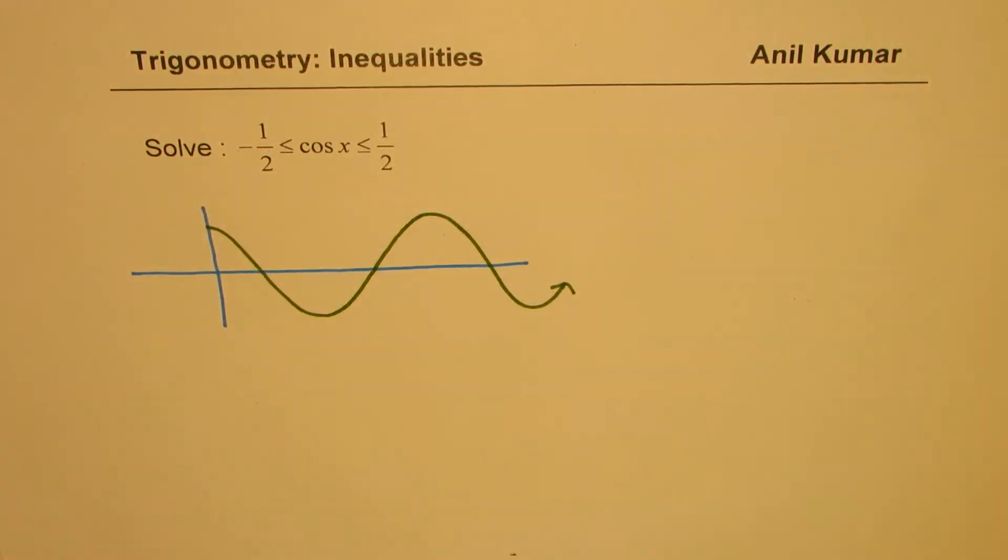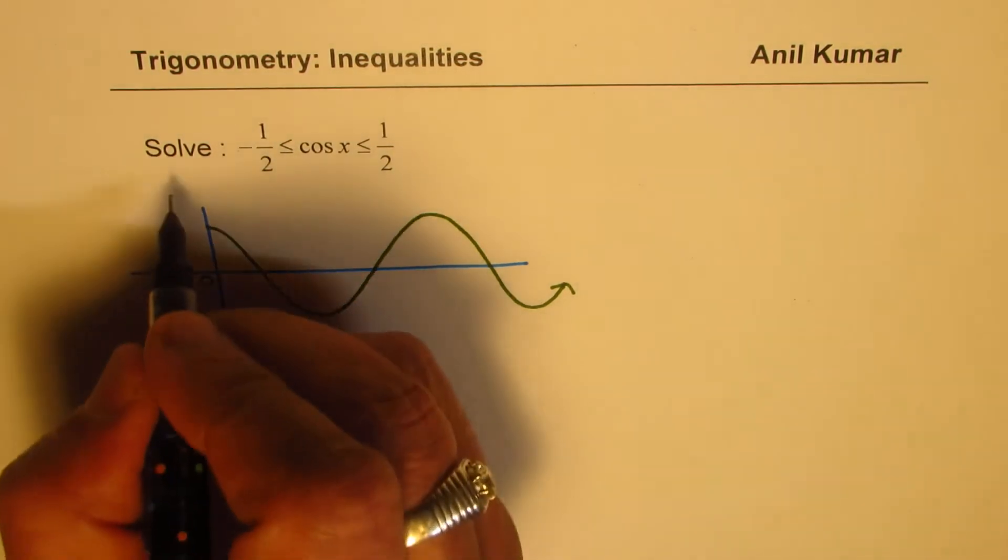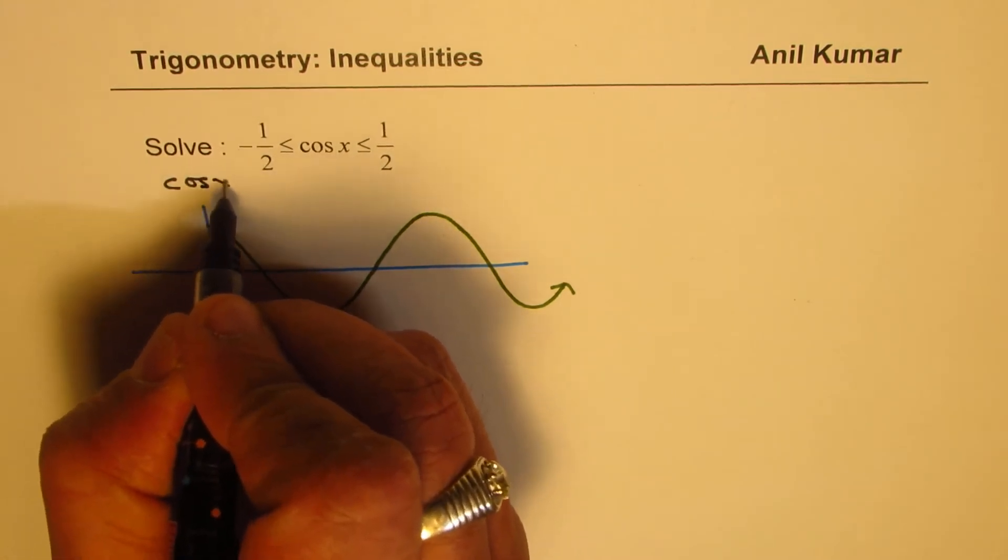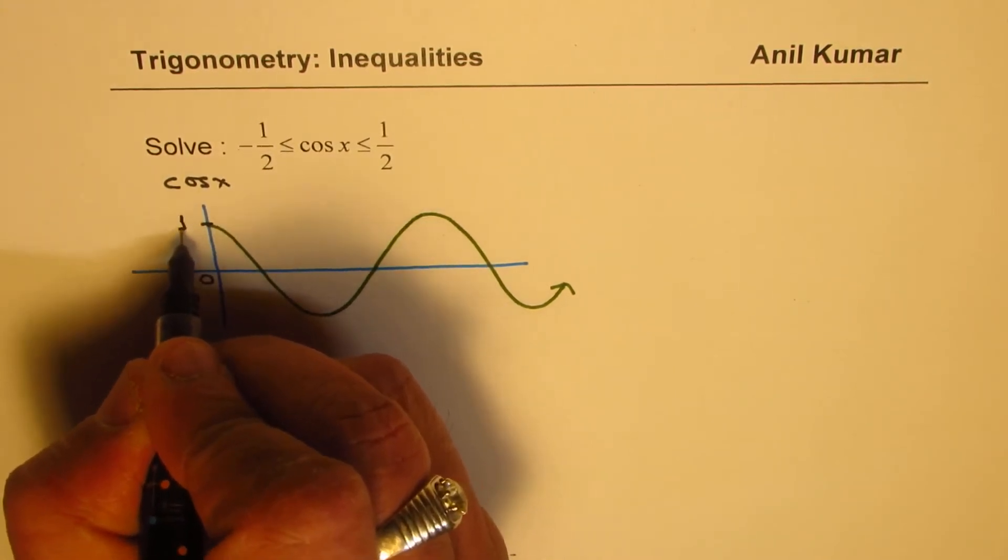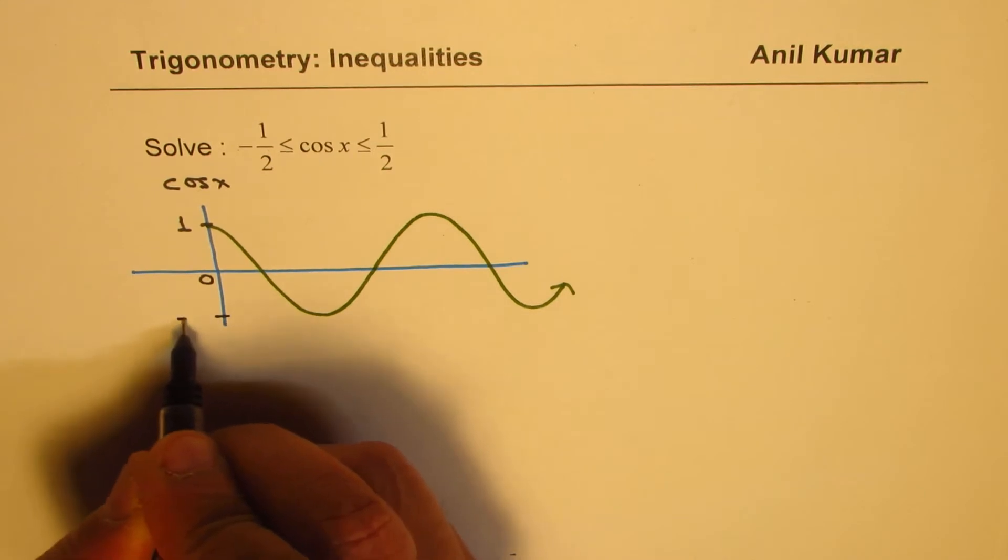The period for the function is 2π. So this is 0. We have a sketch of cos(x) and the maximum value as you know is 1 and the minimum value is minus 1.